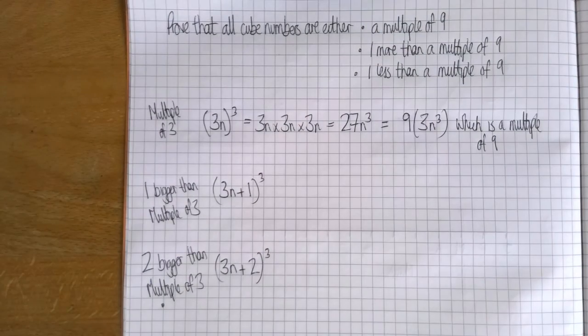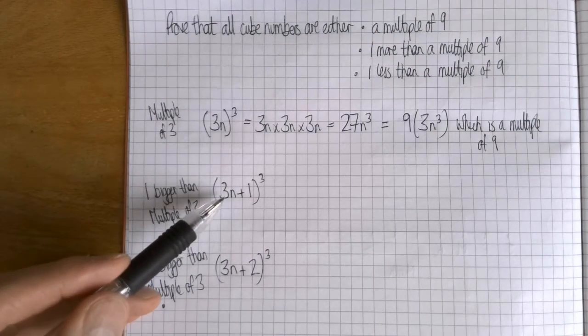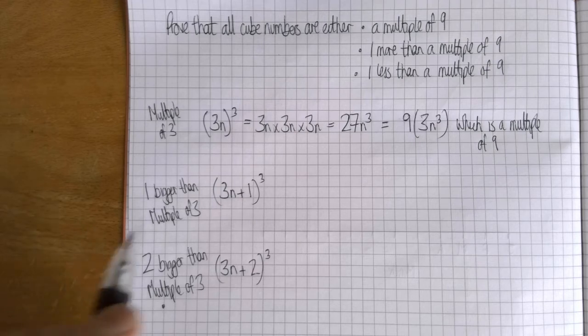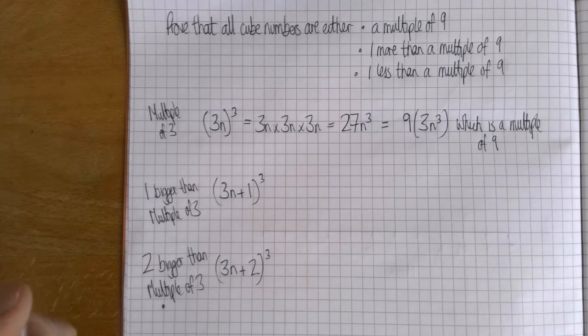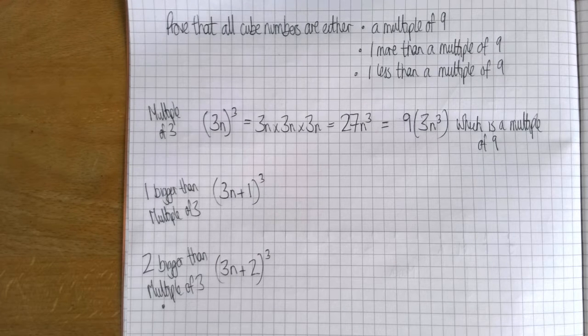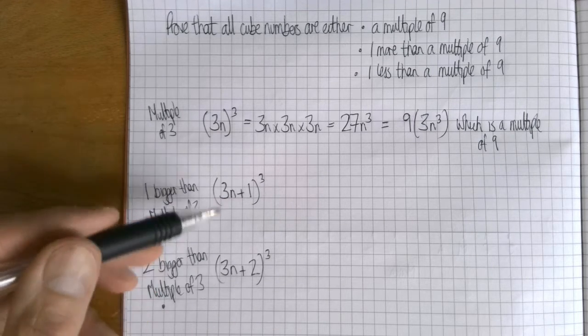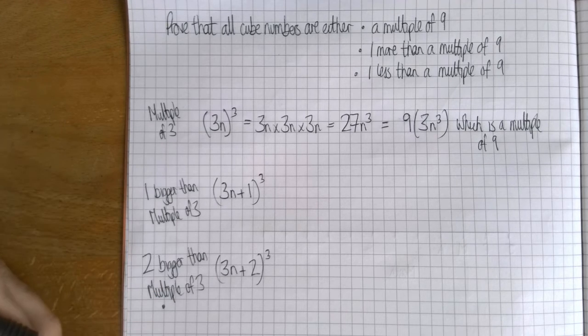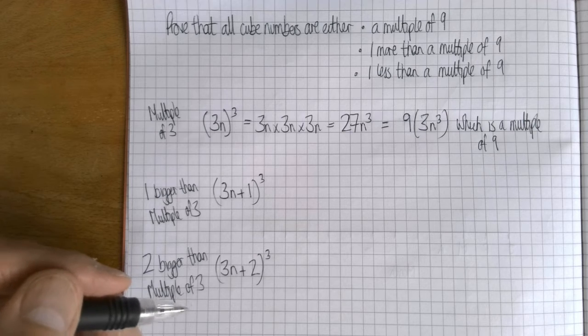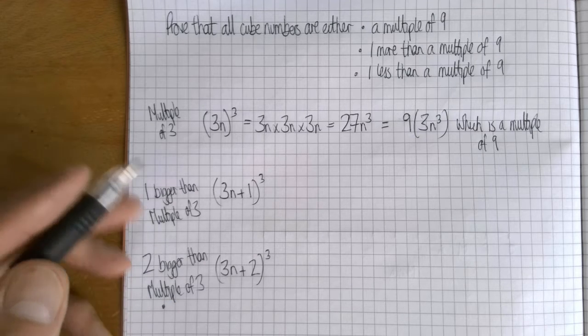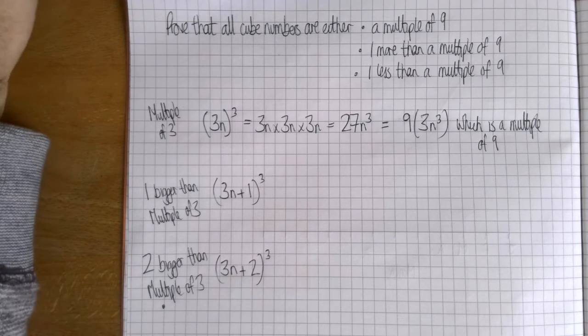So what you need to do is expand this and this. And of course in the last lesson I was doing it by gridding it out, multiplying 3n plus one by 3n plus one and then expanding, multiplying it by 3n plus one again. But because you could use the binomial, you could use the binomial for this. So go on, have a go. See if you can work out (3n + 1)³ and (3n + 2)³ and then we'll reconvene in a minute when you've had a go at that.